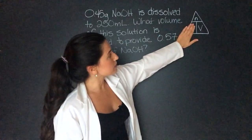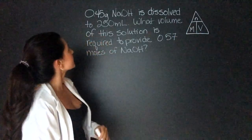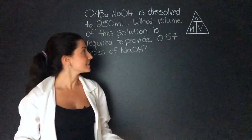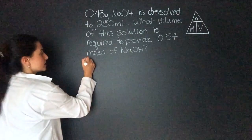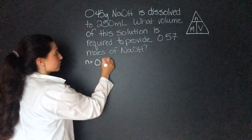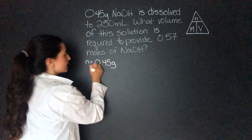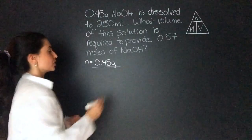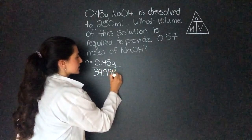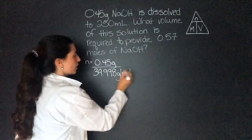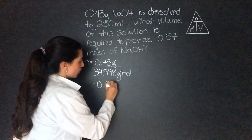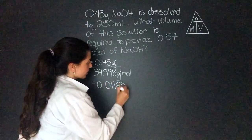Molarity is moles divided by volume. Well, they give us the mass and the volume. So we can find the moles using the mass and then find the molarity. So the moles in this solution is the mass divided by molar mass, which is 0.45 grams divided by the molar mass of sodium hydroxide. I calculated to be 39.998 grams per mole. The grams will cancel out and we'll be left with 0.0125 moles.